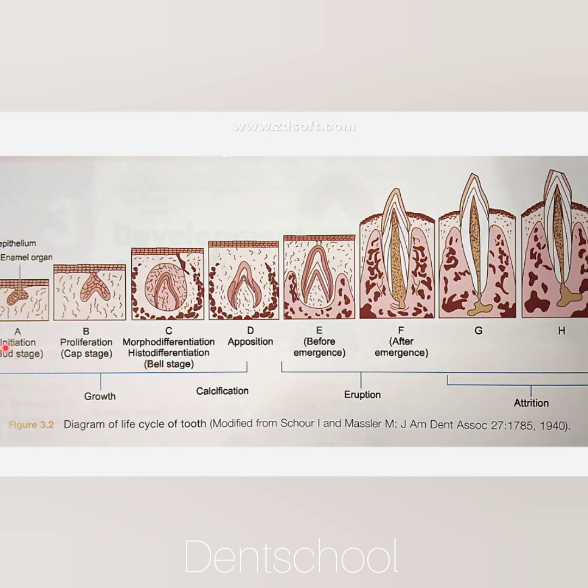Based on histophysiology, we have different stages: initiation, proliferation, morphodifferentiation, and apposition. This was the brief summary of the development of dental lamina. In the next video, we will continue with the various stages of tooth development. Thank you.